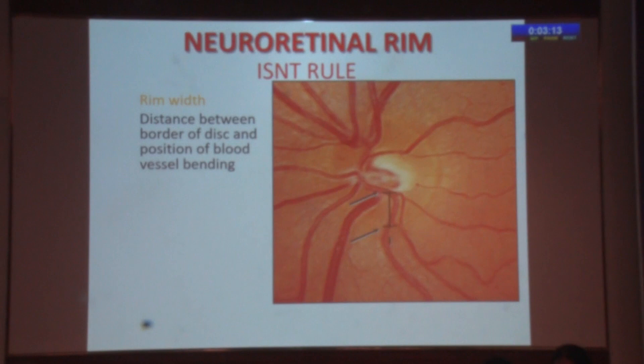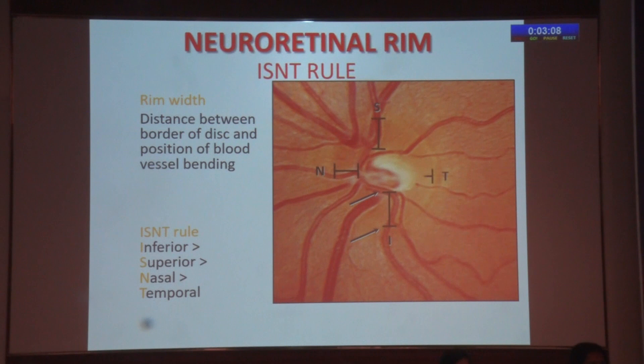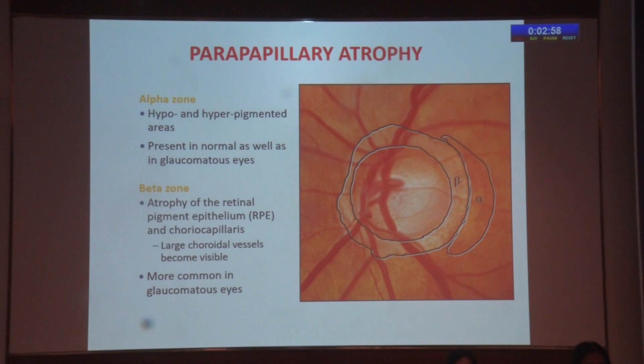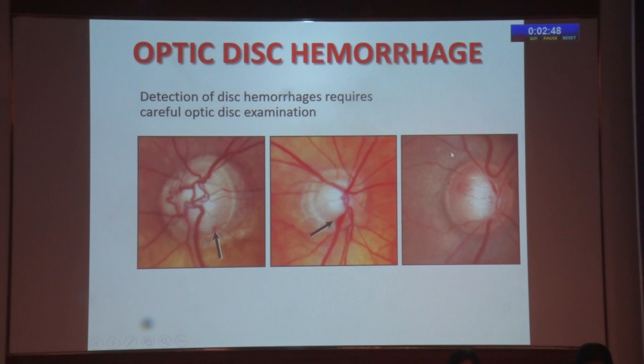The ISNT rule — inferior, superior, nasal, temporal — is the order in which the neuroretinal rim should decrease in thickness. Any deviation requires follow-up. Regarding parapapillary atrophy, we are interested in the beta zone, right next to the disc, not the alpha zone. Optic disc hemorrhages are most pathognomonic in the inferior part of the disc. They generally disappear in two to six weeks and get converted to a notch.